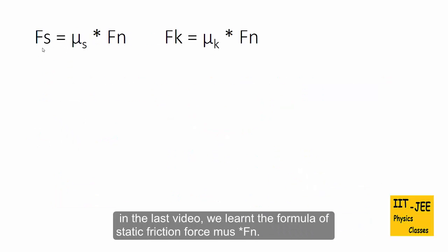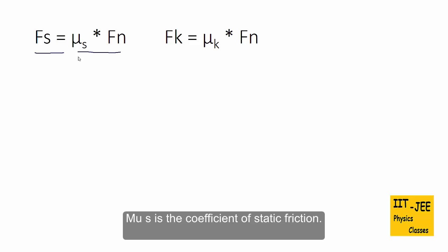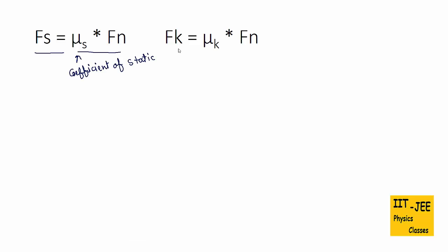In the last video we learnt that formula of static friction force is μs times Fn. μs is the coefficient of static friction. In the same way formula of kinetic friction force is μk times Fn. Here μk is coefficient of kinetic friction.